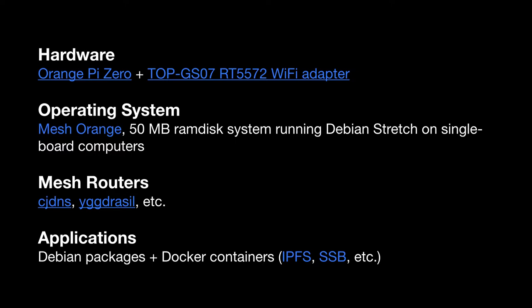Ambitiously we could use Raspbian, but we want something very lightweight — like OpenWrt but with access to the applications we're familiar with through Debian. So Hamish built the Mesh Orange project and managed to build a full Debian Stretch system in less than 50 megabytes. The whole thing runs on RAM disk: when the device boots it loads the entire operating system into RAM, and you can pop the SD card out and it'll still operate fine.